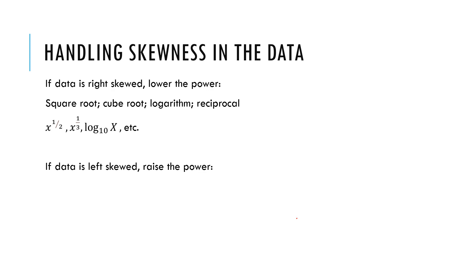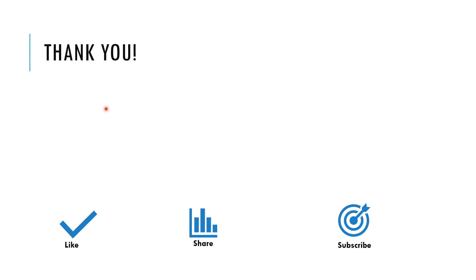For left-skewed data, we raise the power of the variable — square, cube, x to the power 4, and so on — until we get the right result. As you practice with real data, you'll understand the best way to handle these things. Thank you, I hope this presentation has been helpful and added some value to your knowledge. If you liked this video, please like, share, and subscribe.